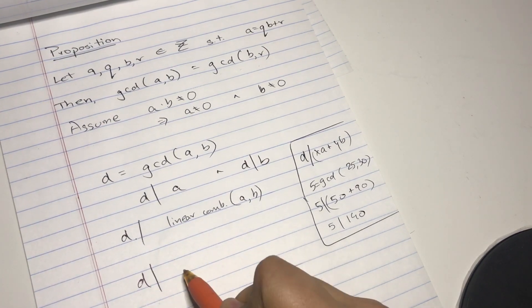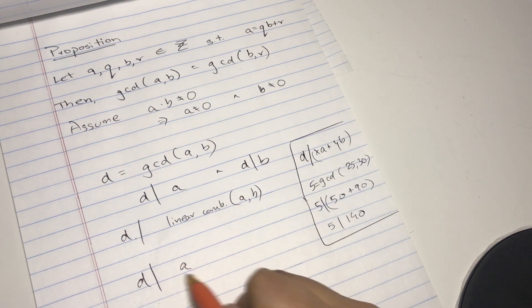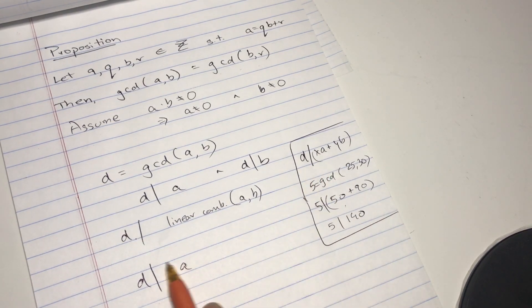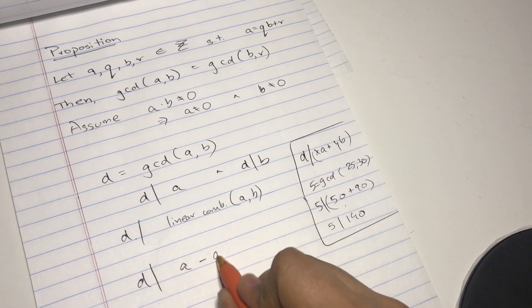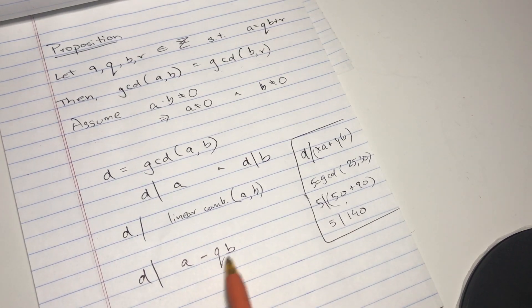a, so x in this case is 1, and minus qb. And y in this case is negative q or minus q.